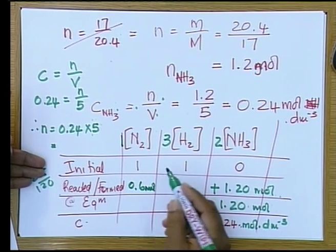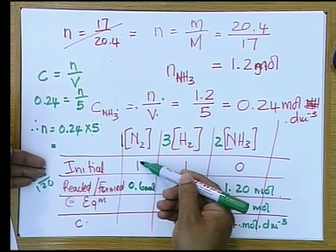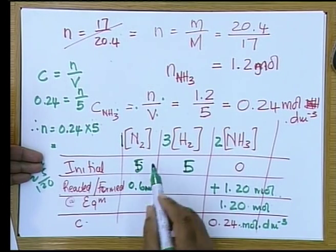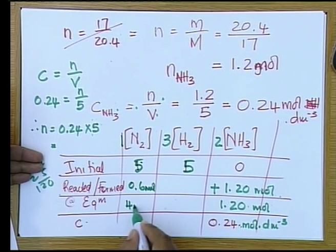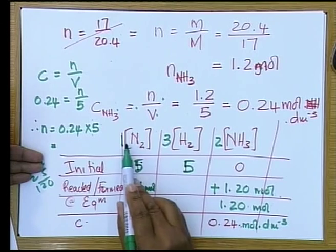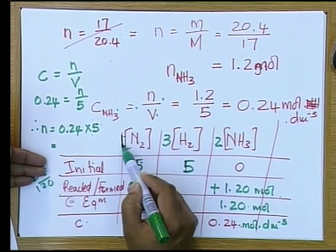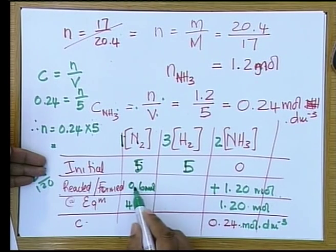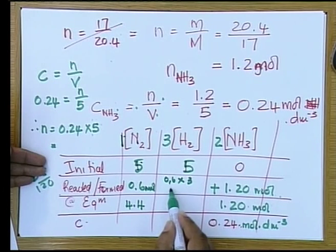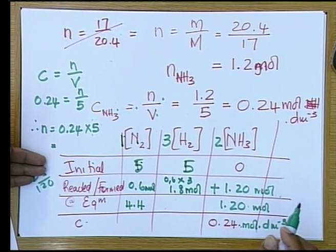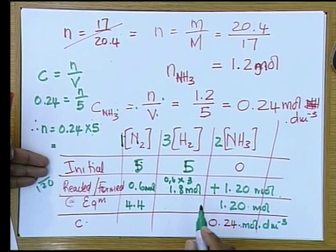If we started with 5 moles of nitrogen, that gives us 4.4 moles of nitrogen left at equilibrium. Looking at our mole ratios, for every one mole of nitrogen, three moles of hydrogen will react. Therefore we take 0.6 times 3 and get 1.8 moles of hydrogen used. So 5 minus 1.8 gives 3.2 moles of hydrogen remaining at equilibrium.